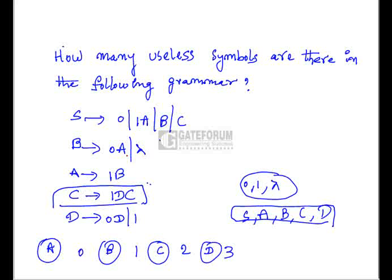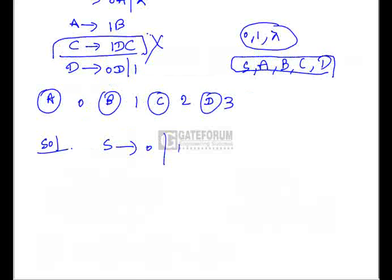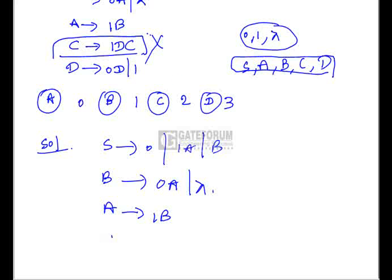When you remove one useless symbol, you may get new useless symbols. Here S → C will be removed, and all productions related to C will be removed. The remaining productions are: S → 0 | 1A | B, B → 0A | ε, A → 1B, and D → 0D | 1. A and B are fine — A → 1B, using B as epsilon gives a single '1', and both are reachable from the start symbol.